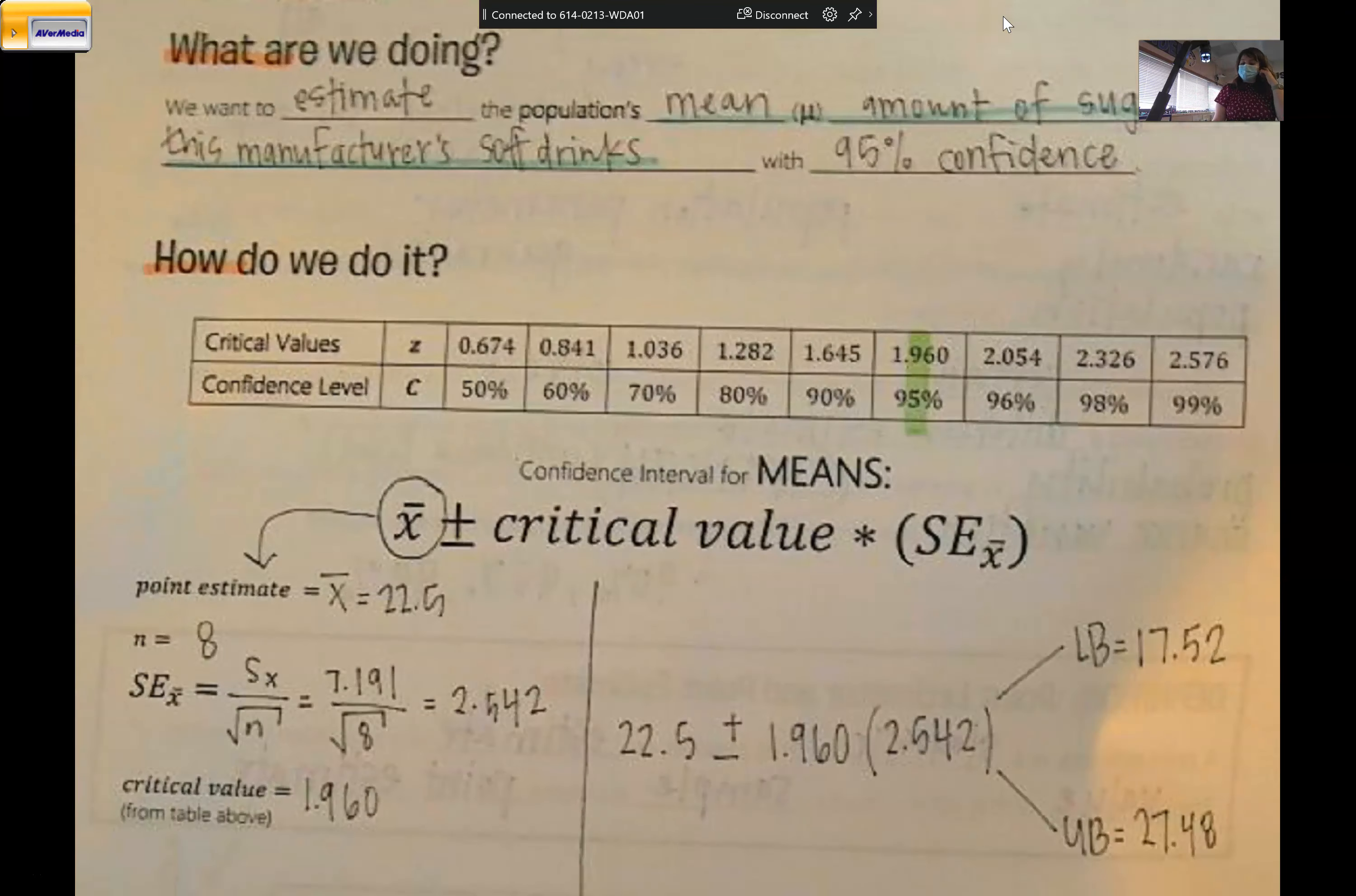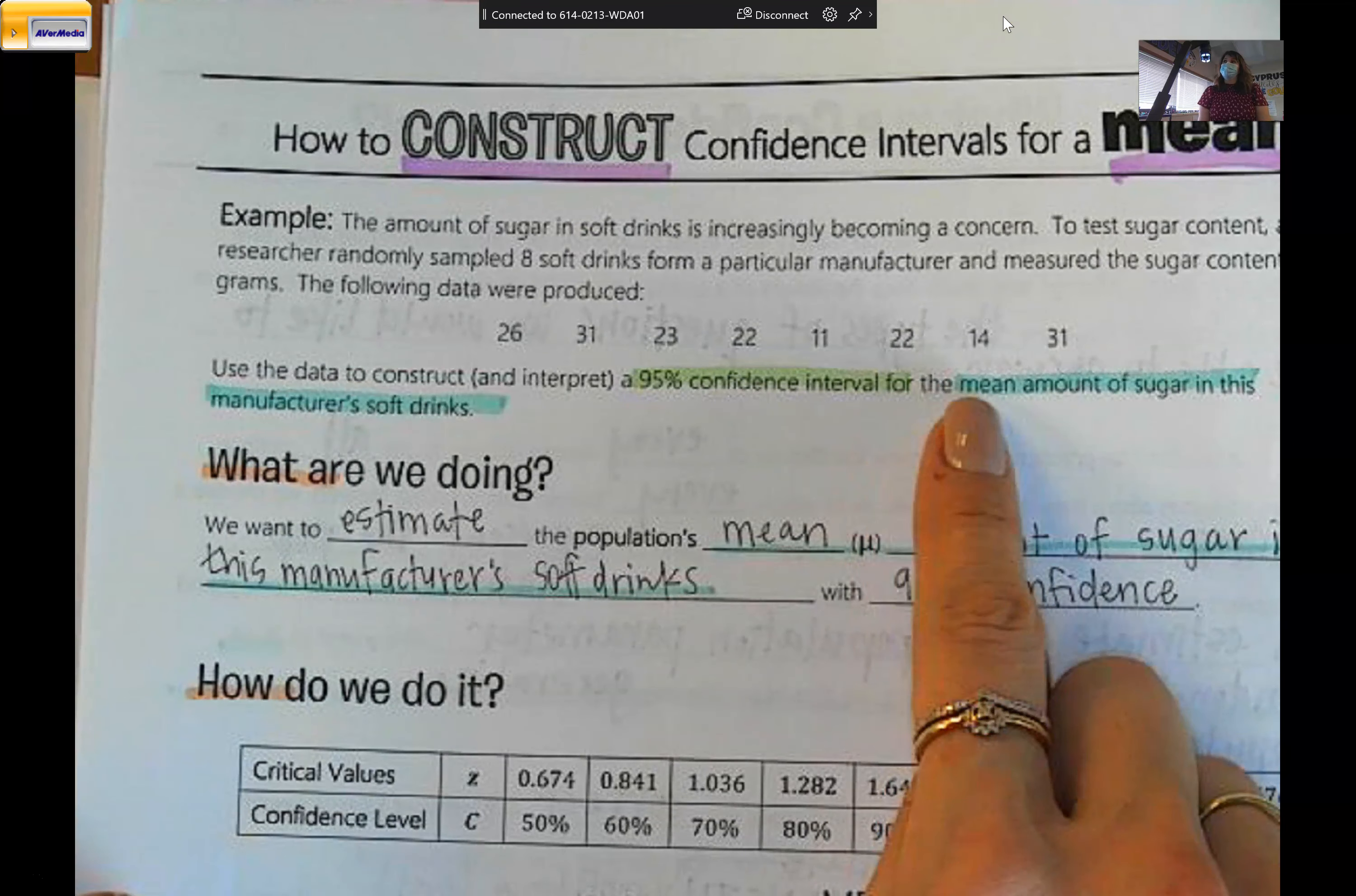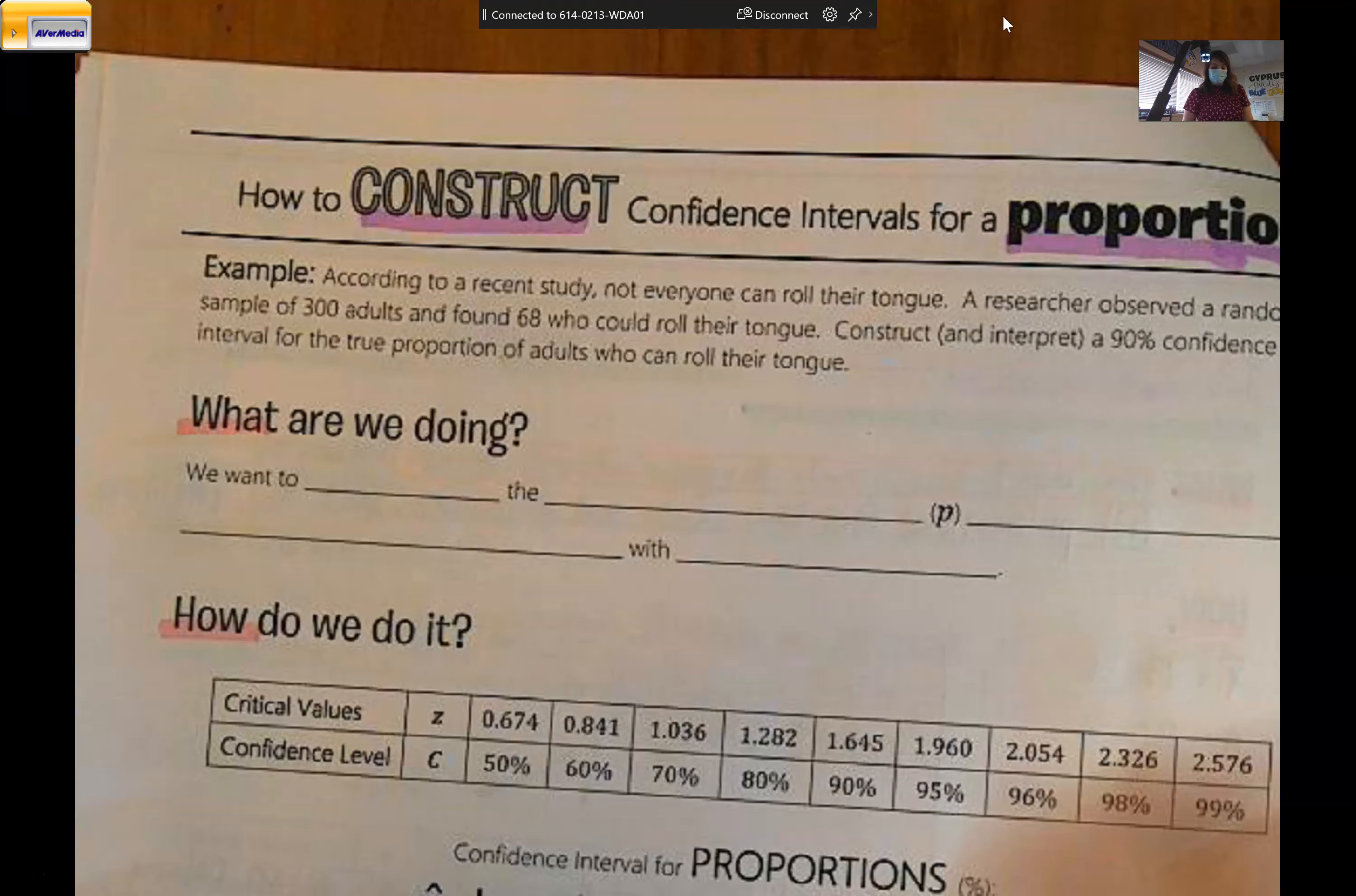I had a really good question yesterday about how do I know when I'm working with a proportion or a mean? And the problem will tell you. So in all the ones we just did, it said find the confidence interval for the mean, confidence interval for the mean salary, confidence interval for the mean weekly weight loss.